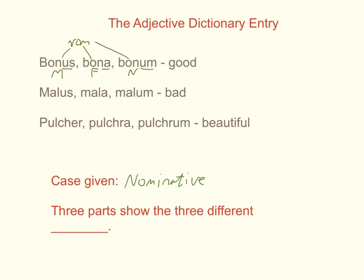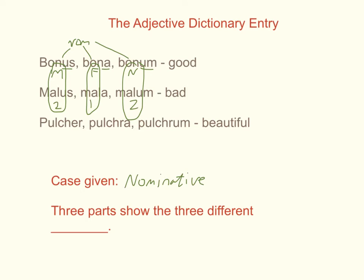You'll note that the case endings for adjectives are exactly the same as in nouns — you get 'us,' you get 'a,' you get 'um.' These are first and second declension, which is great because there are no new endings to memorize. You're given the nominatives in all three genders. Looking at malus, mala, malum — it's just the root 'mal' with the same endings: 'us,' 'a,' 'um.' You may hear me refer to these as 'us-a-um' or as 2-1-2 adjectives. The masculine takes the second declension, the feminine takes the first declension, and the neuter takes the second neuter declension.